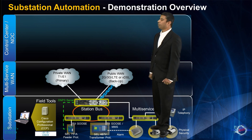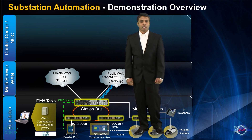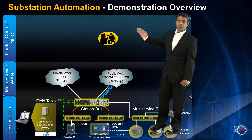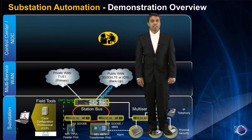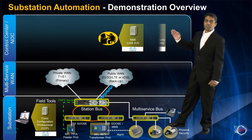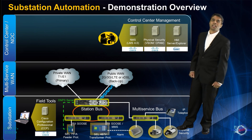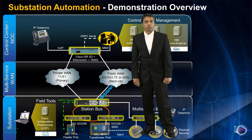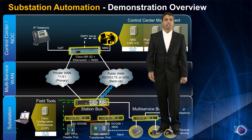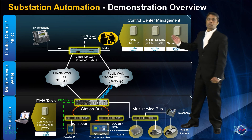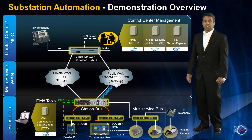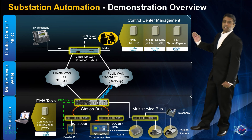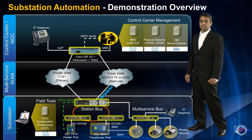Now, let us take a look at the control center or the network operations center. Utilities depend on different applications to control and monitor the grid. These applications are hosted and managed in the control center or network operations center. In the demonstration, we will talk about network management, physical security, and human-to-machine interface, or HMI, applications. Network management applications like Cisco LMS provide capability to control, monitor, and manage network devices. The physical security application provides interactive control and monitoring of IP cameras and badge reader systems, which provides the physical security perimeter at the substation. Finally, the HMI application controls and monitors the grid using SCADA protocols.